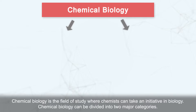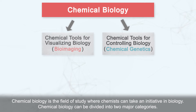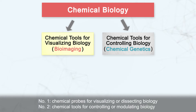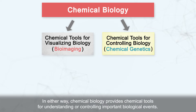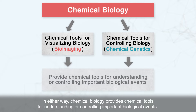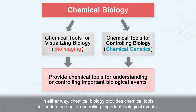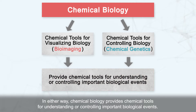Chemical biology can be divided into two major categories. Number one: chemical probes for visualizing or dissecting biology. Number two: chemical tools for controlling or modulating biology. In either way, chemical biology provides chemical tools for understanding or controlling important biological events.